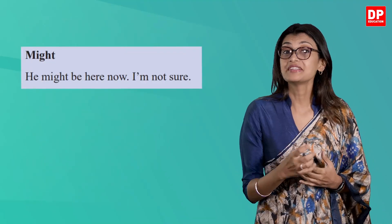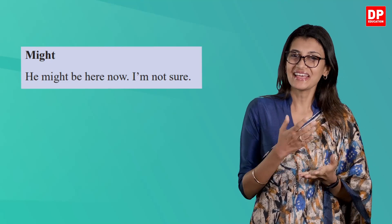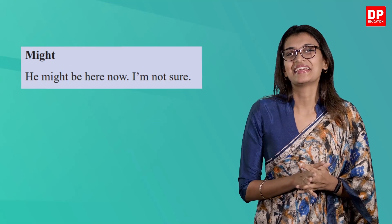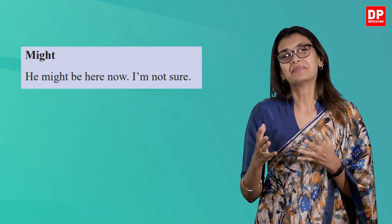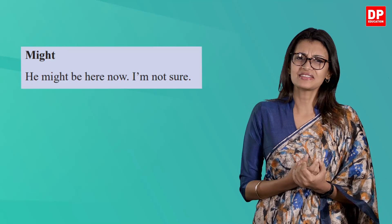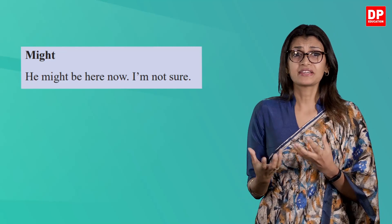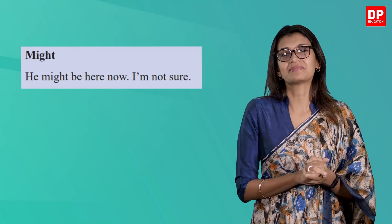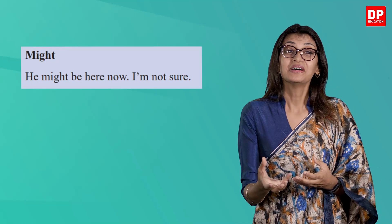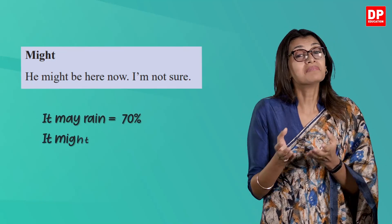Next we have 'might.' He might be here now — I'm not sure. There is a possibility that he has arrived but no one is sure about it. Interestingly, 'may' and 'might' can normally be interchanged without a significant difference in meaning. However, 'might' often expresses a smaller chance of something happening when expressing possibility. For example, look at the difference between 'it may rain' and 'it might rain.'